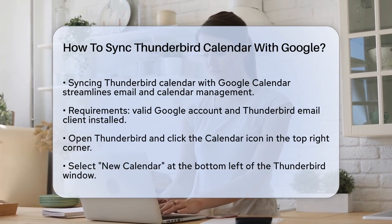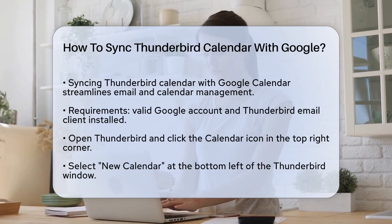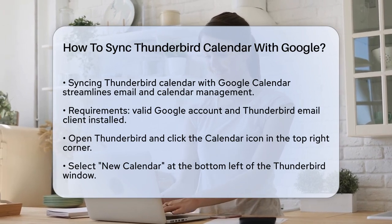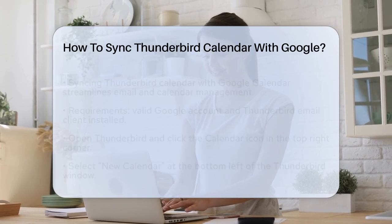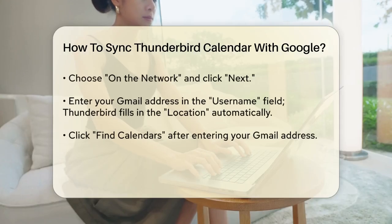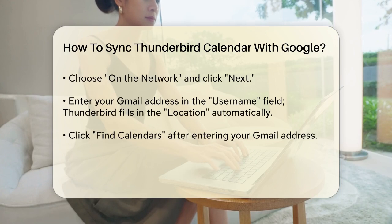Next, click on New Calendar at the bottom left corner of the Thunderbird window. In the resulting window, select On the Network and click Next.